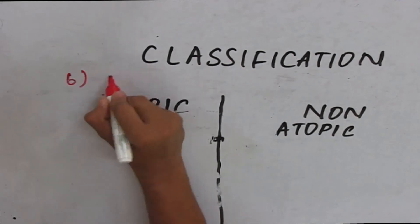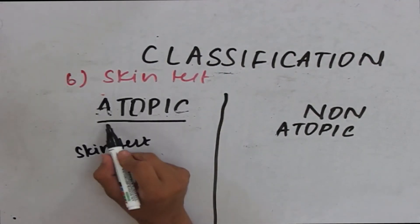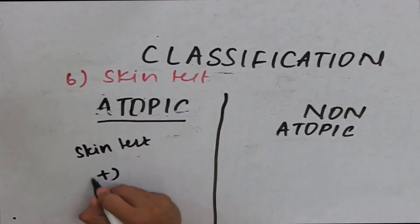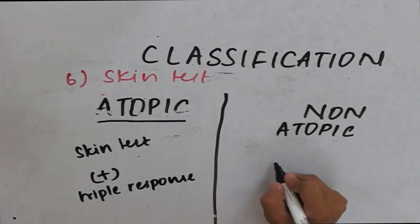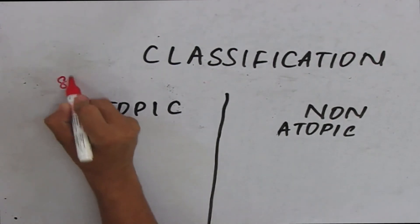The next criteria is skin test. When a skin test is done on a person suffering with atopic bronchial asthma, there is positive skin test, that is a triple response is seen. Whereas, the skin test is negative in case of non-atopic type. The last criteria I'm going to tell is examples.